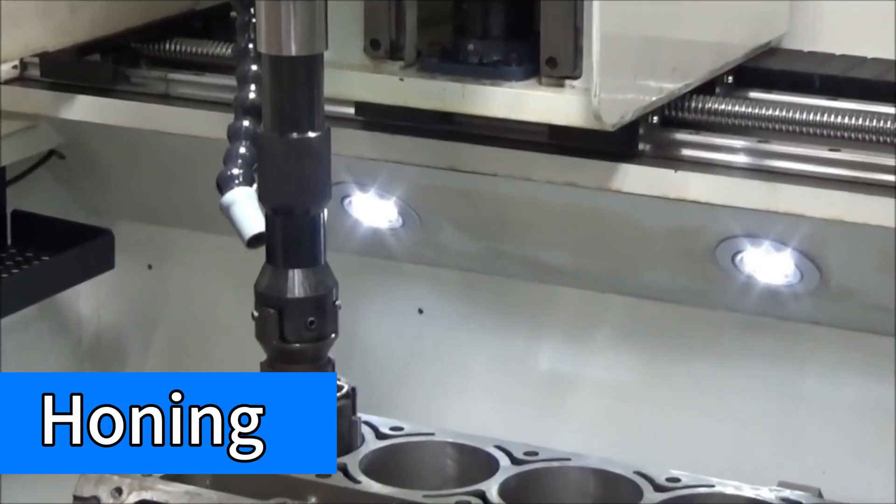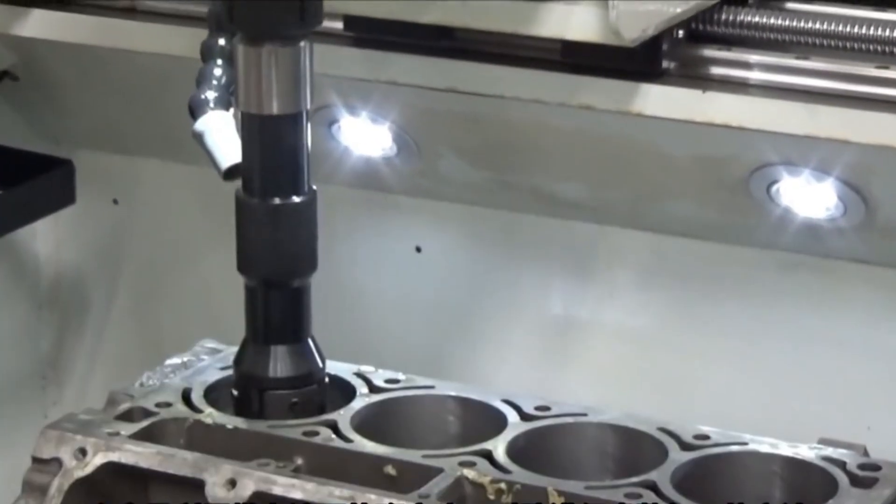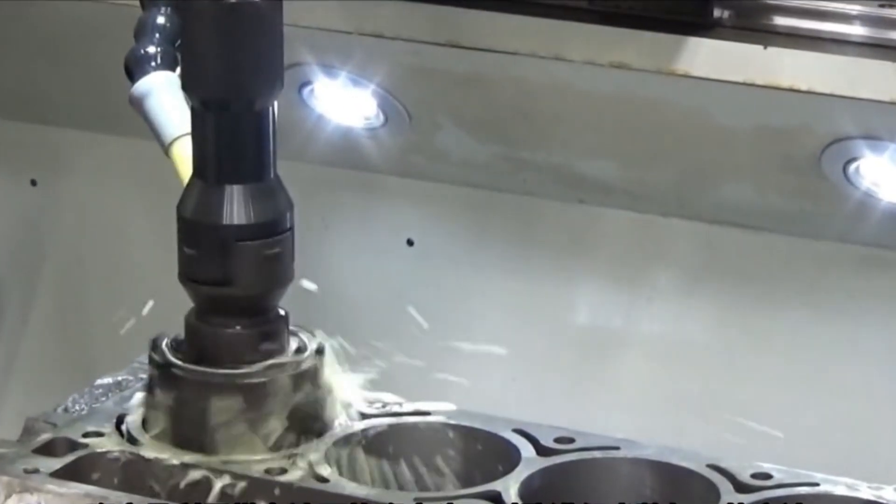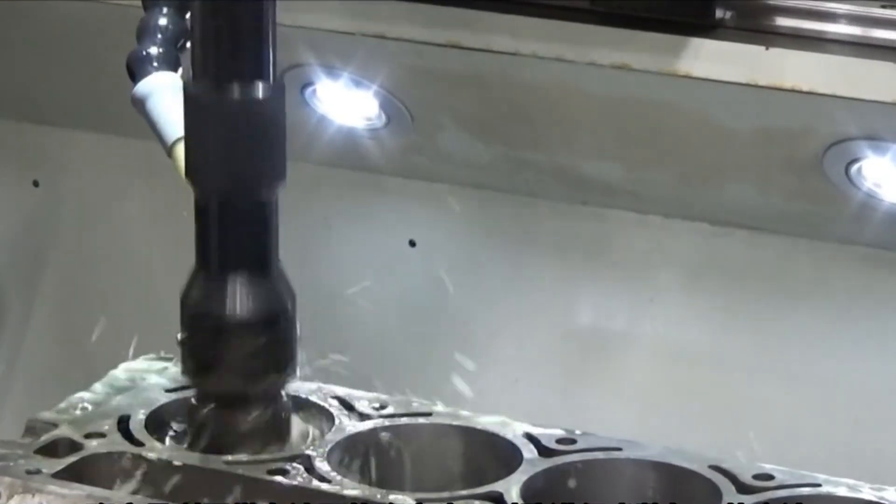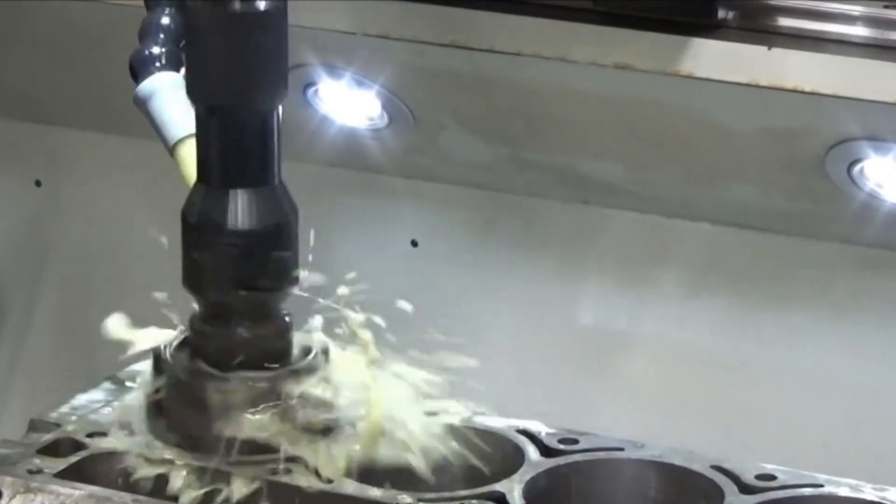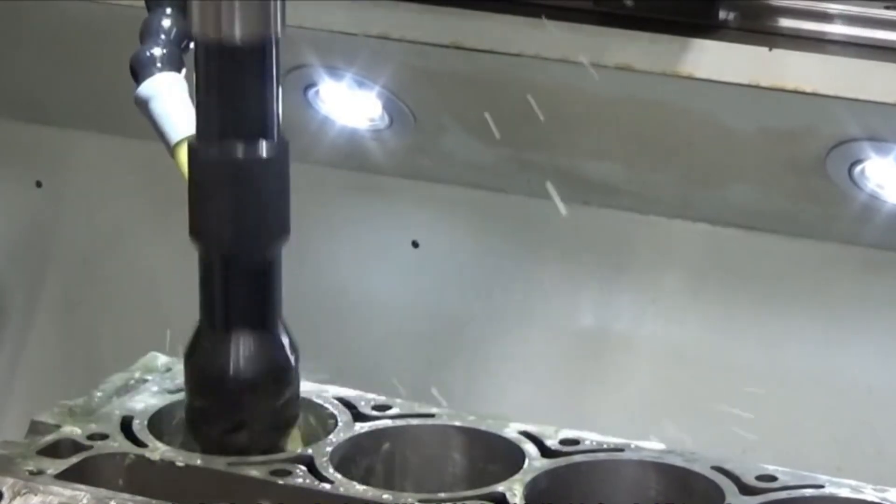Honing is a method of finishing the hole by using a honing head with an oilstone. When honing, the workpiece is fixed, and the honing head is driven by the machine spindle to rotate and make reciprocating linear motion.